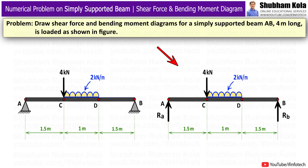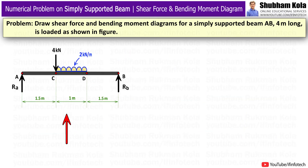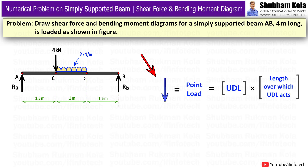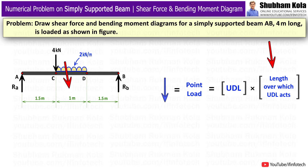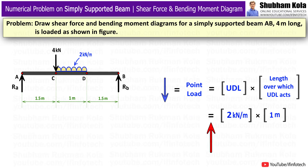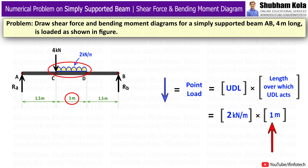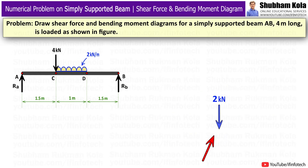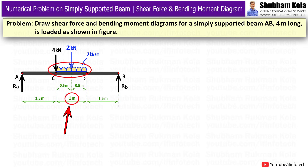First, I will draw the free body diagram for this beam section. To solve this problem, we have to convert the uniformly distributed load into a point load by multiplying the UDL value with the length over which it acts: 2 kN/m × 1 m = 2 kN. This converted point load acts at the midpoint of the UDL length.